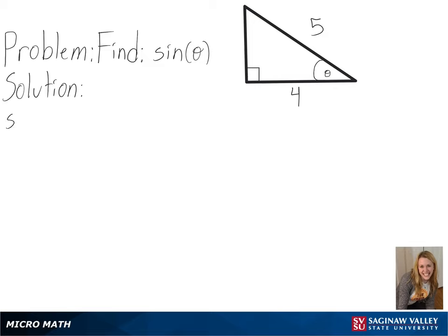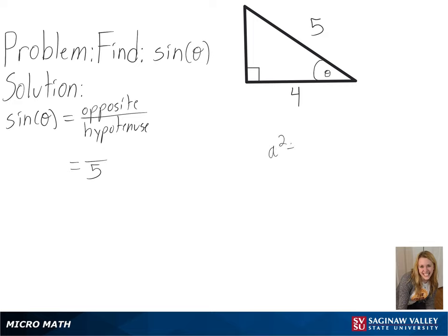Our problem is to find sine of theta. To find our sine value at this angle, we will need to find the length of the opposite side over the length of the hypotenuse. We already know our hypotenuse is 5, but we can use the Pythagorean theorem, or a squared plus b squared equals c squared, to solve for our opposite side.